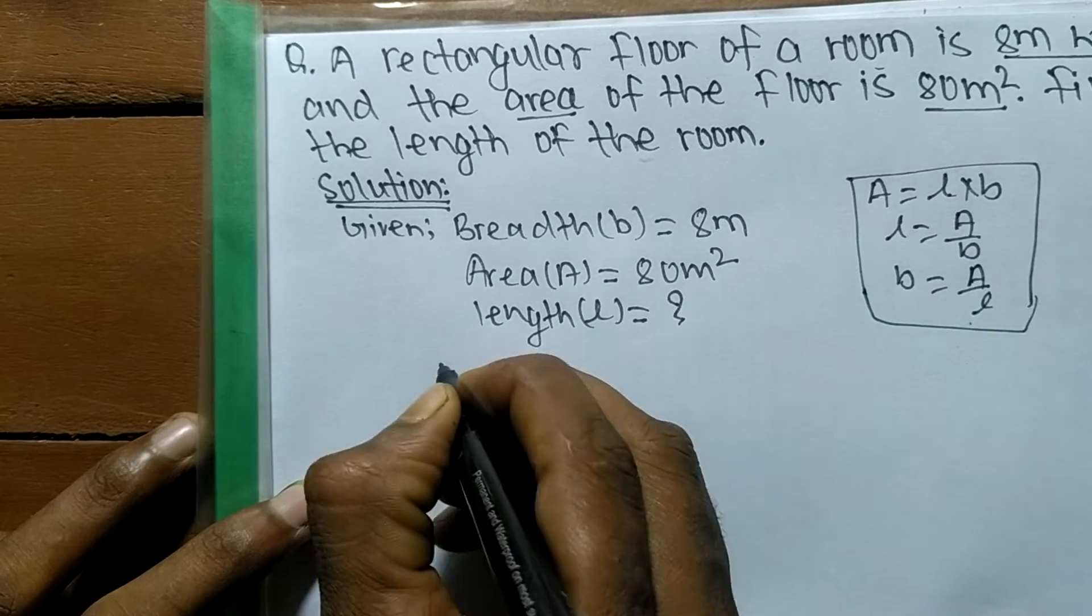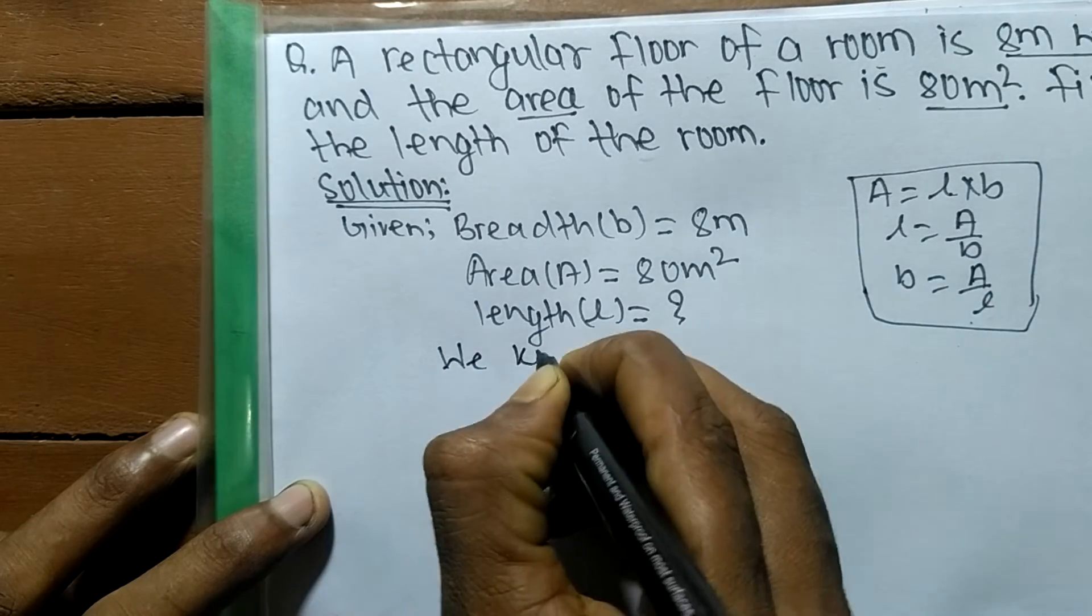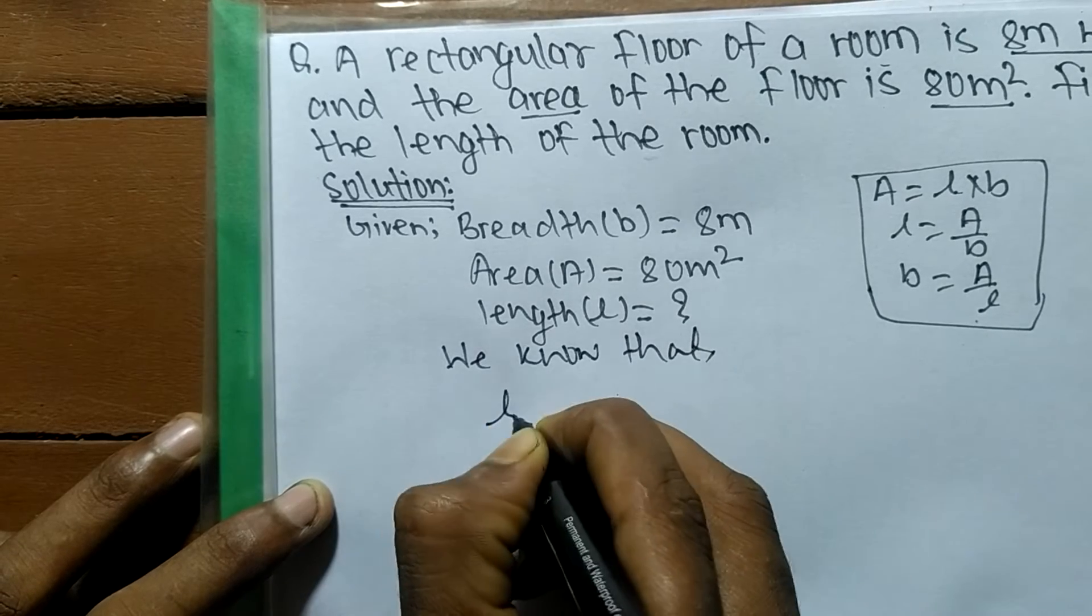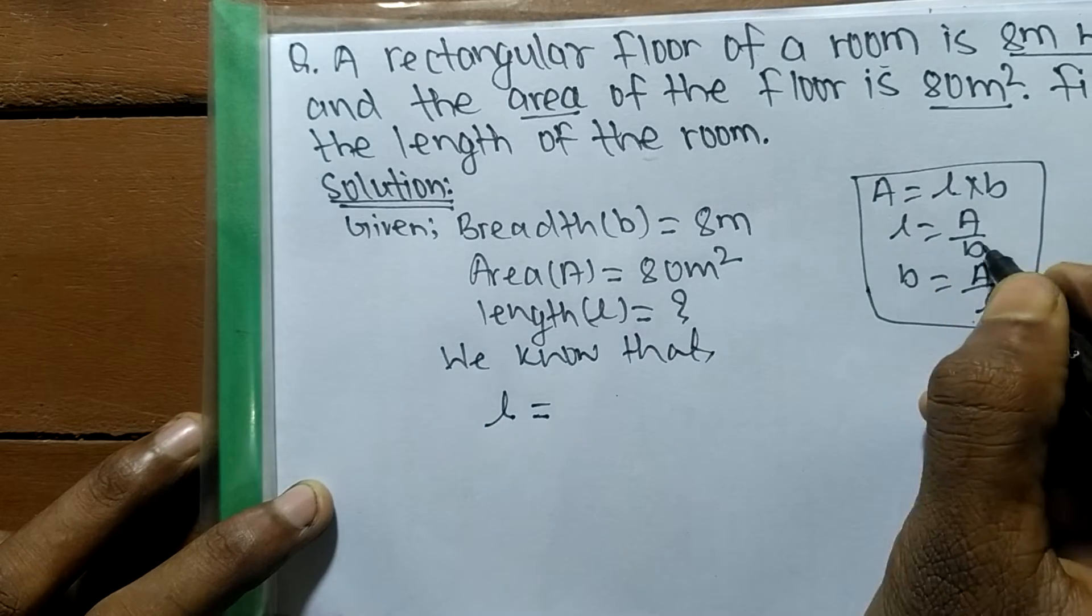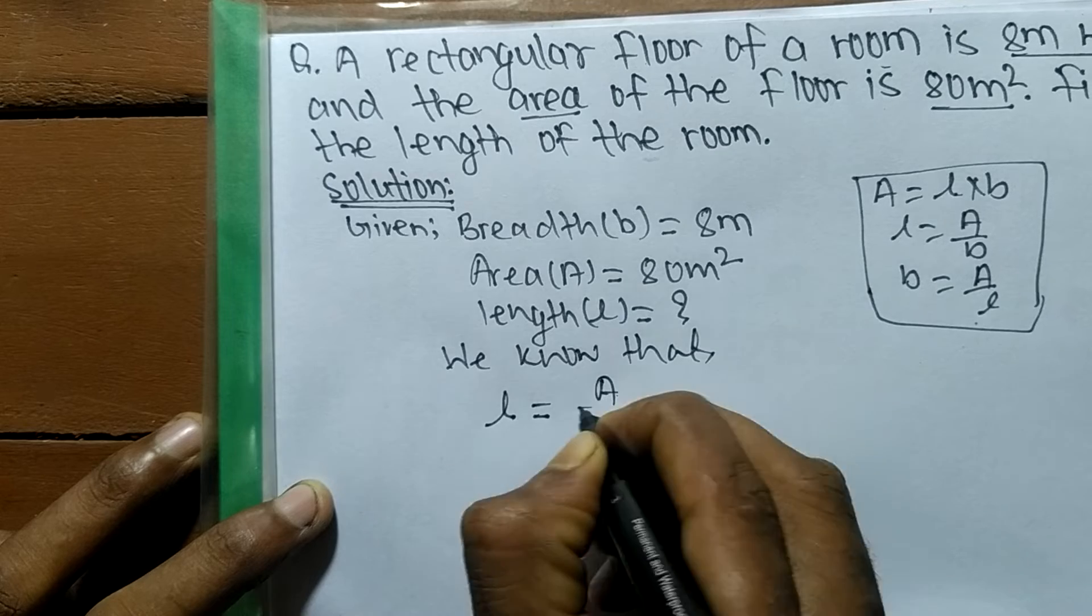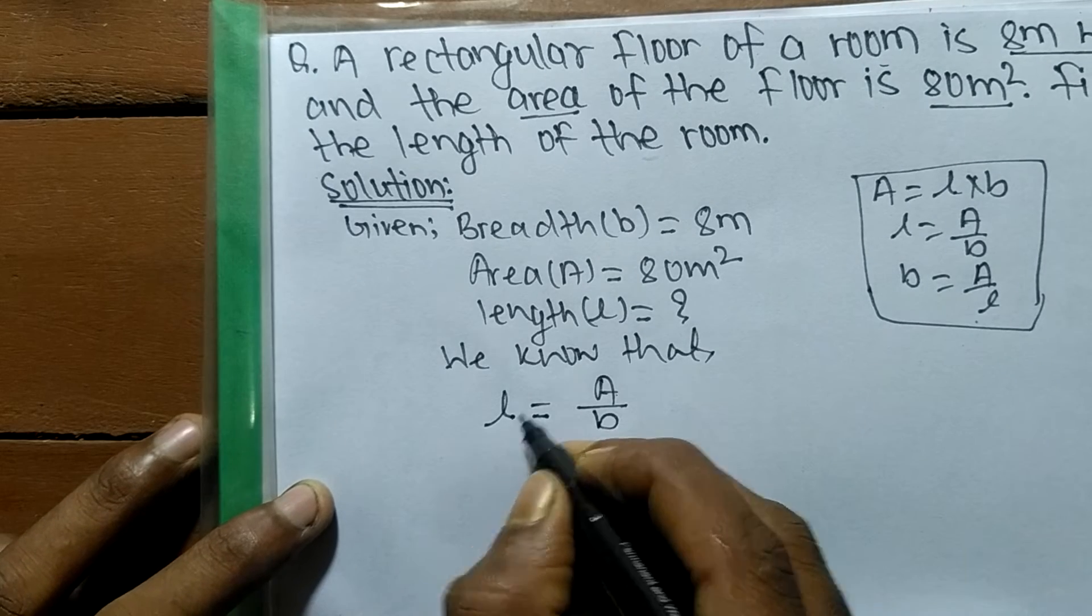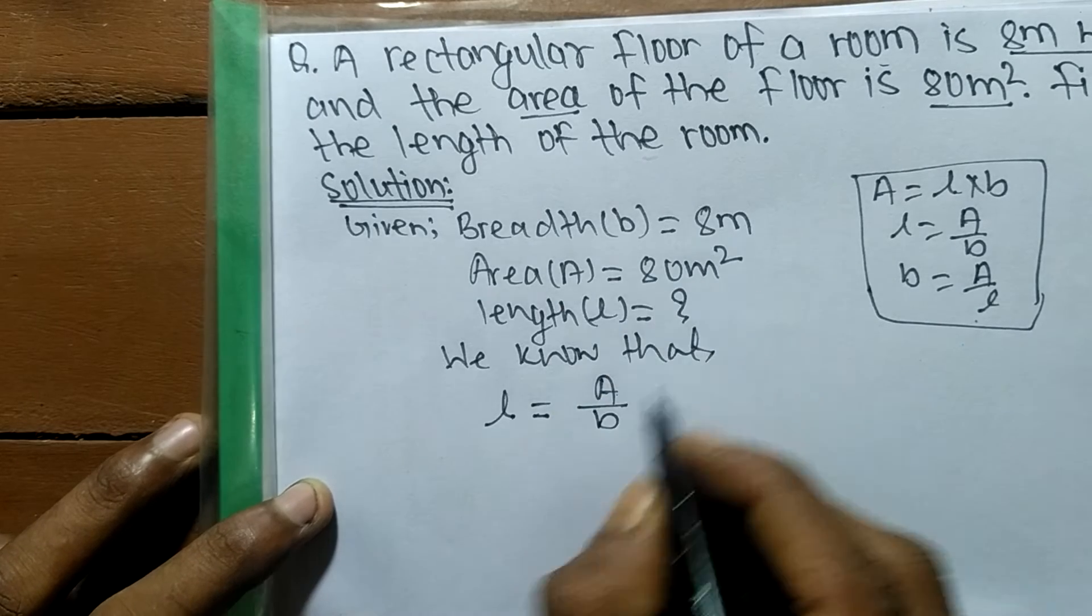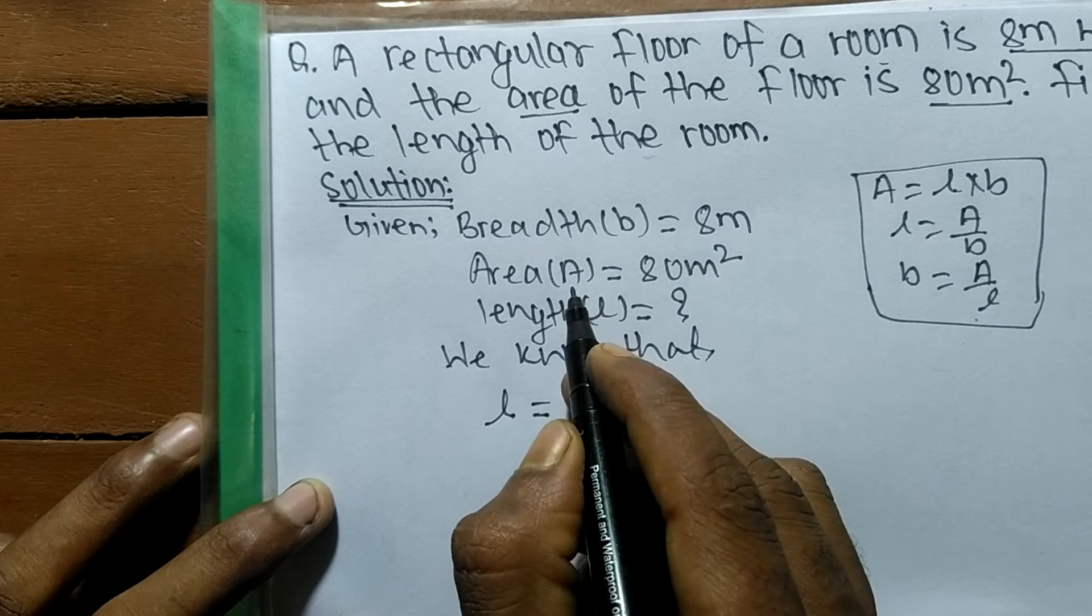We know that length l is equal to A by b. We have denoted l means length, A means area, and b means breadth.